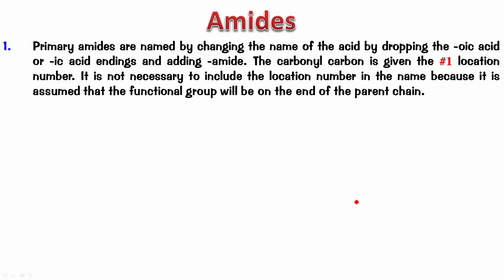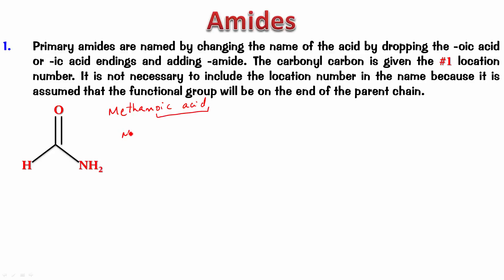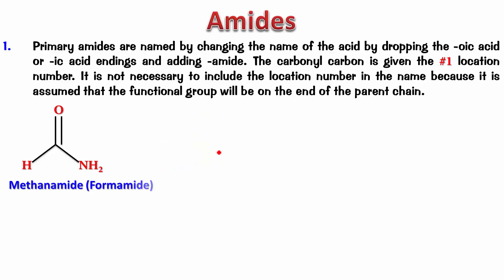When I give you the structure, pause the video, name the compound, play the video back and check the answer. This amide contains only one carbon. A one-carbon acid is named methanoic acid — remove the 'oic acid' and put 'amide', giving methanamide. The common name comes from formic acid, giving formamide. So this is methanamide or formamide.